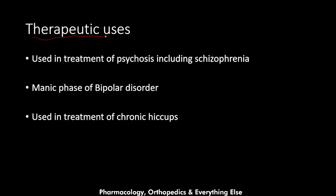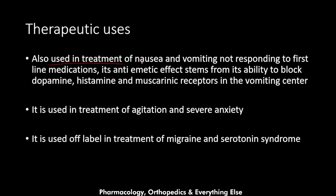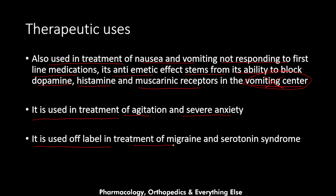Now let's talk about the therapeutic uses of chlorpromazine. It is used in the treatment of psychotic disorders including schizophrenia, and in the treatment of the manic phase of bipolar disorder. It is used for chronic hiccups, and for nausea and vomiting not responding to first-line medications — its anti-emetic effects stem from its ability to block dopamine, histamine, and muscarinic receptors in the vomiting center. It is also used for agitation and severe anxiety, and off-label for migraine and serotonin syndrome.